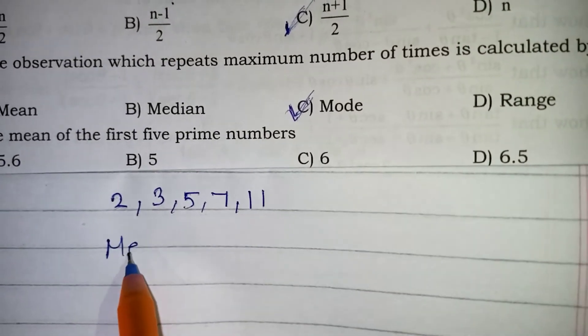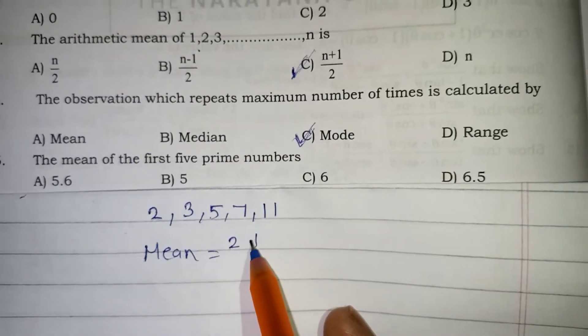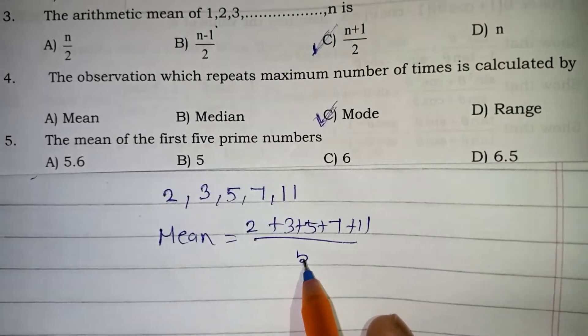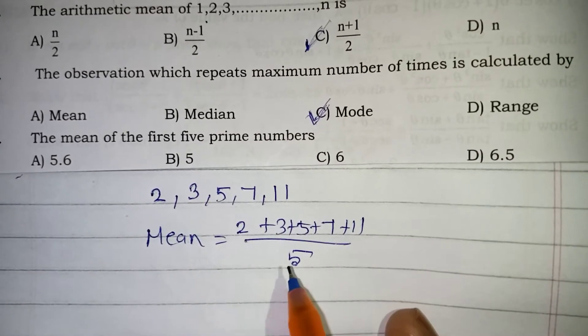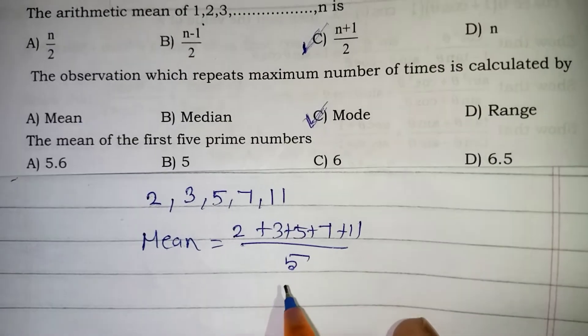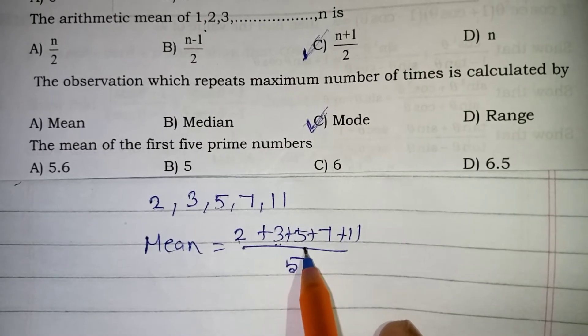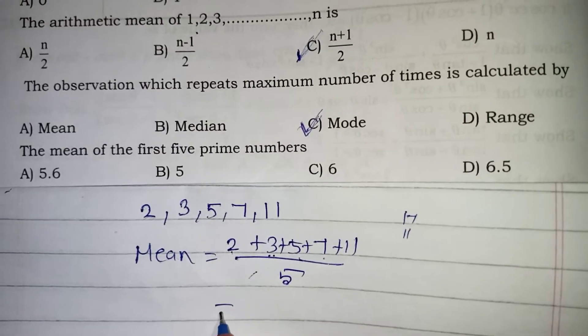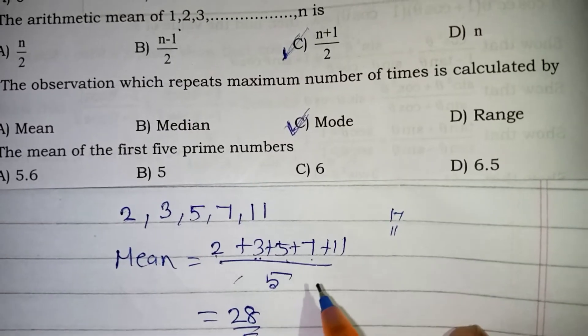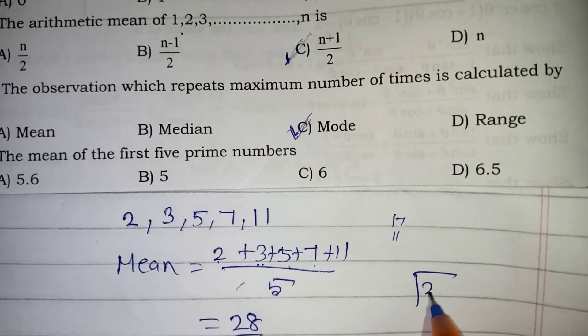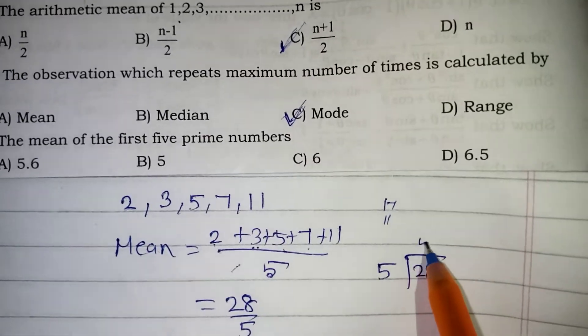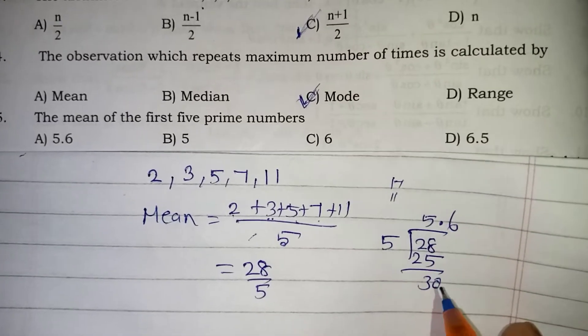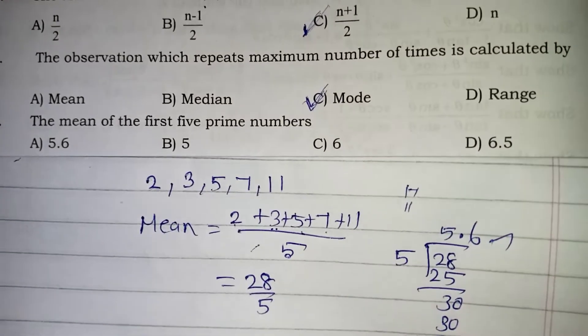Now we need to find the mean. Mean is nothing but we have to add them. Sum of all the observations by total number of observation is your formula. So this is a formula. Now we have to add them divided by total number of observation is 5. Now 2 plus 3 is 5, 5 plus 5 is 10, 10 plus 7 is 17, 17 plus 11 will be 28. So 28 by 5 we are getting. So the answer is given in decimal also. So let's divide. 28 by 5. 5 fives are 25, balance 3. Make a point, take a 0. 5 sixes are 30. So 0. 5.6 is a correct answer.